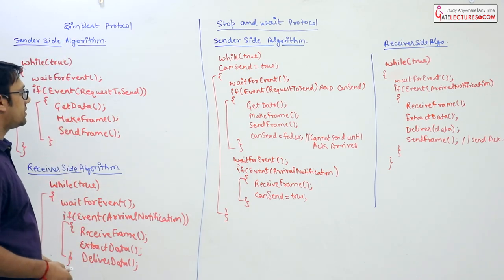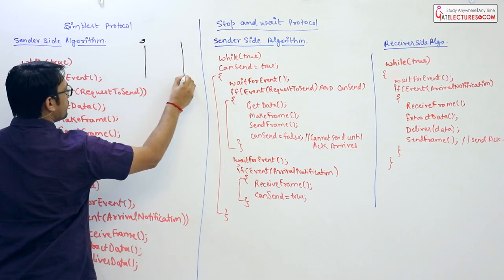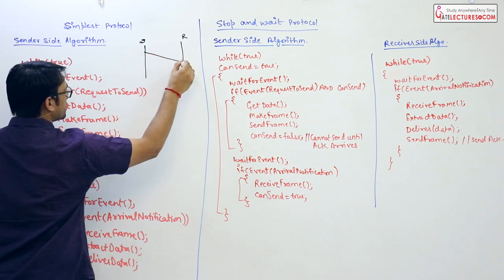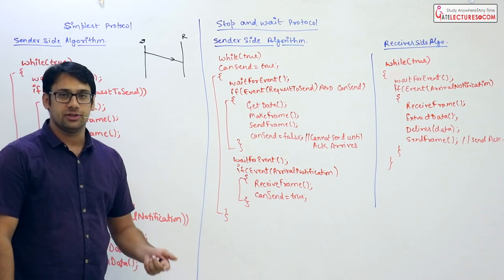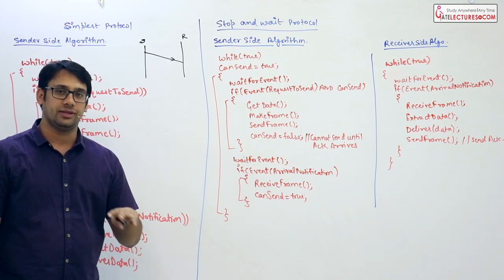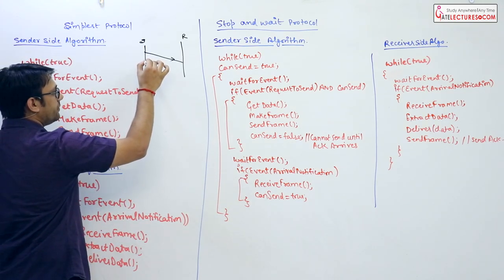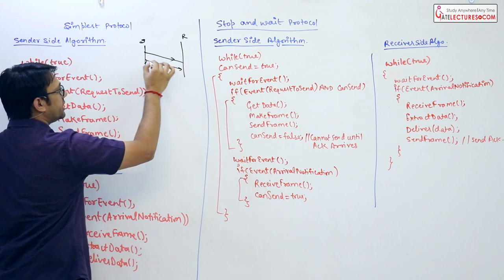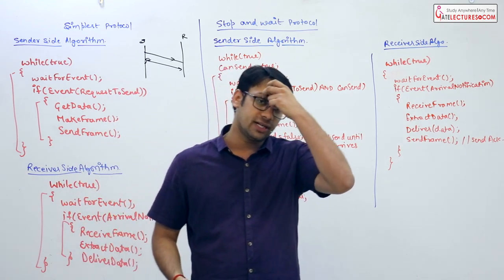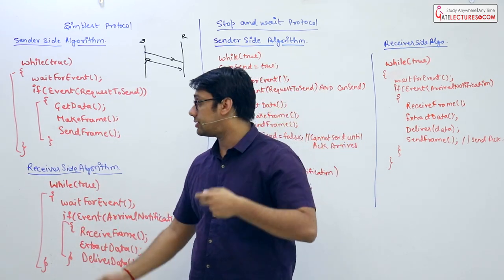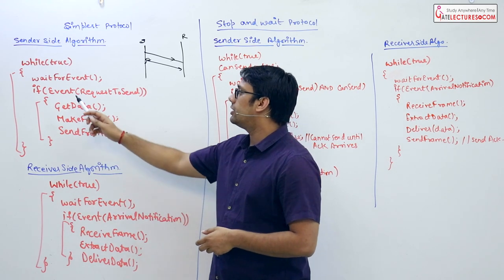The simplest protocol works like this: we have a sender and a receiver, and the sender just sends data to the receiver. The sender is not waiting for any acknowledgement — it simply assumes the data will be delivered. Every time the sender creates a data frame, it transmits it, and it will be delivered to the receiver. Both the sender and the receiver sides use an algorithm, and this algorithm uses a while-true loop.